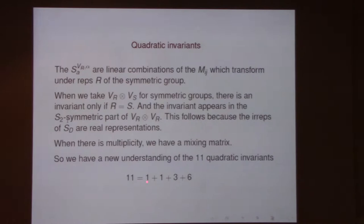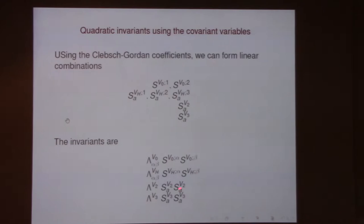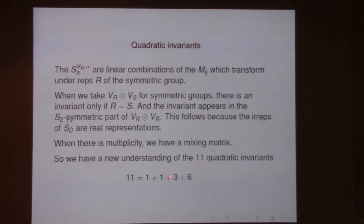You have a 2×2 matrix because you have two copies of V₀, and a 3×3 matrix because you have three copies of V_H, and 1×1 matrices for V₂ and V₃. These are symmetric matrices because the functions are quadratic. So these 11 quadratic invariants come from: 2 from V₂ and V₃, 3 from the symmetric 2×2 matrix (for the two V₀ copies), and 6 from the symmetric 3×3 matrix (for the three V_H copies).